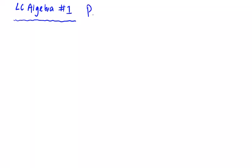In Leaving Cert Algebra 1 we're going to look at Pascal's Triangle in relation to binomial expansion. Binomial expansion is something like (a + b) to the power of n. We could have (3a + 4b) to the power of 5, or (3x + 4y) to the power of 10 — we may not get one with a power that high.